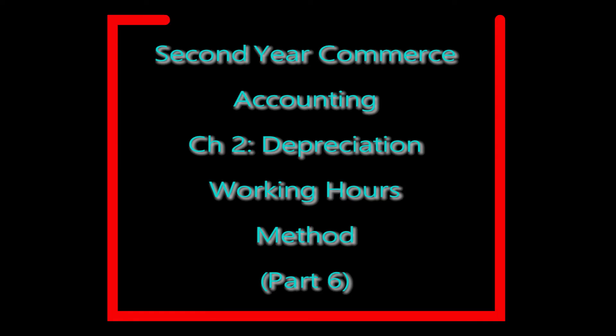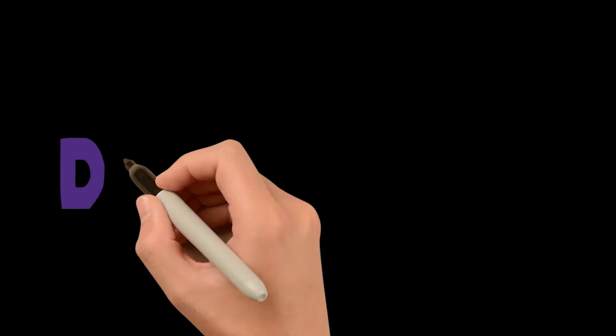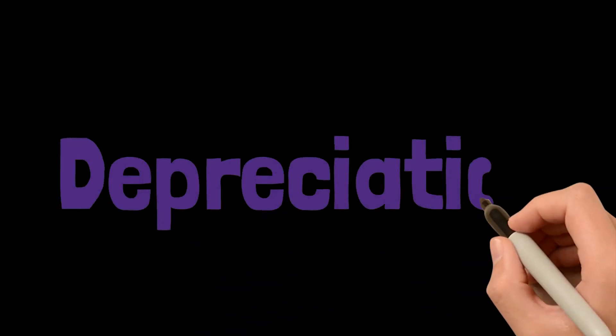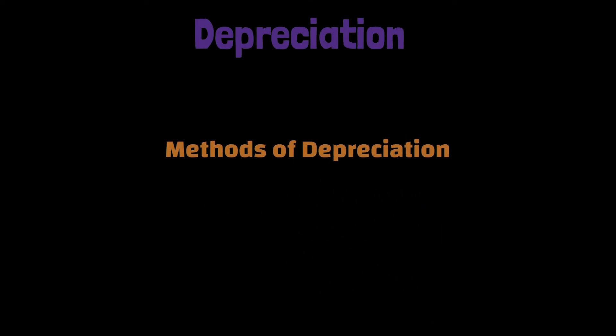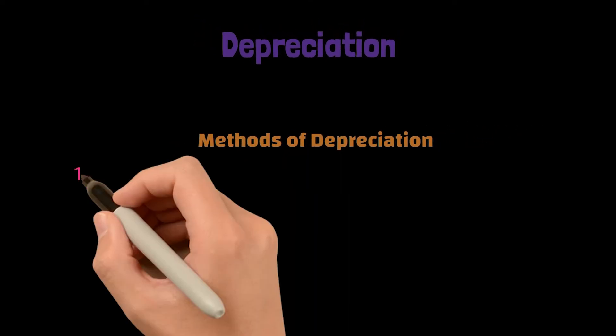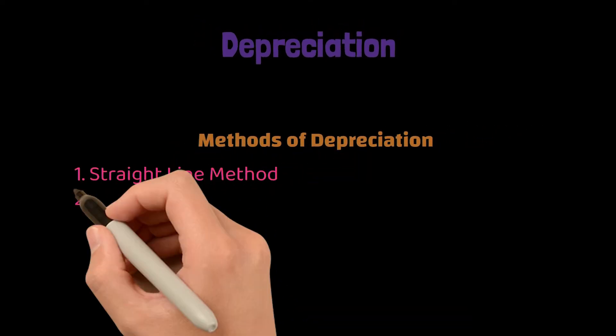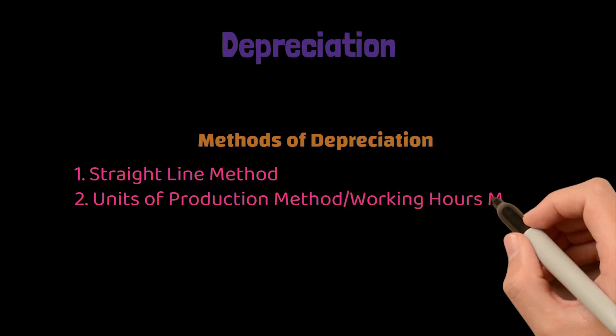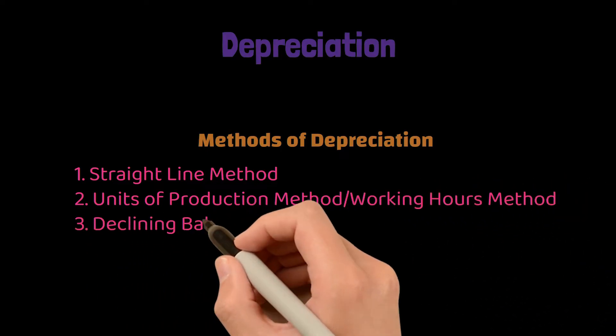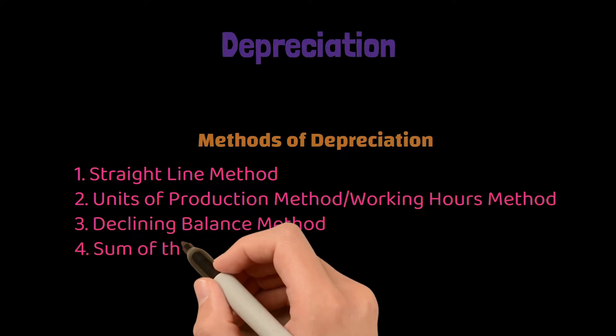Assalamualaikum. This is Second-Year Commerce Accounting. We are studying accounting and chapter number 2 is Depreciation. First we have seen two methods of depreciation: the straight line method and the units of production method.